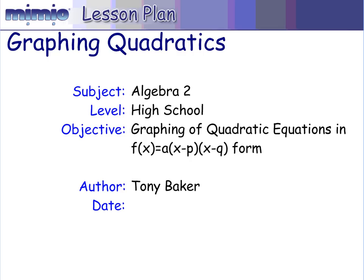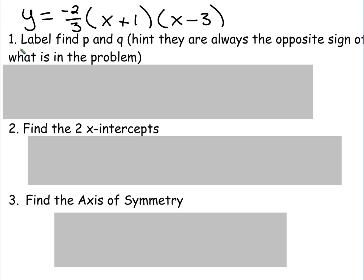This is a review of graphing quadratic equations in the intercept form, which is A times X minus P in parentheses, and then X minus Q in parentheses. For our example this time, we're going to have Y equals negative two-thirds X plus one times X minus three.